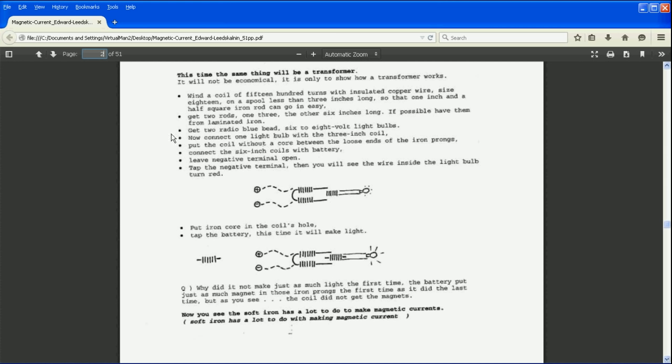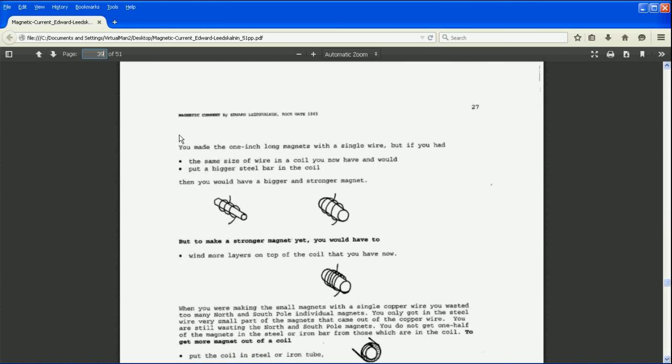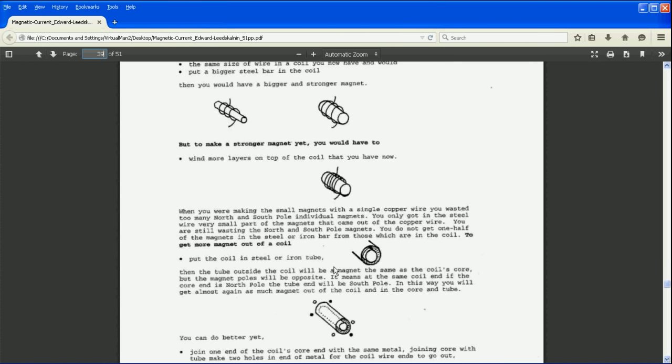On page 39, this is an important page because he is actually talking about how to improve magnetism, how to make coils more efficient. He's talking about if you have a core that's larger it's going to store more magnetism, or if you have more winds that's going to store more magnetism. Those two are well understood.